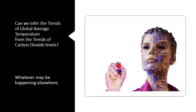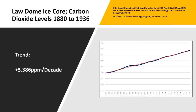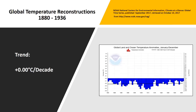We will look at the two major sub-periods to determine whether we can infer the trends of global average temperature from the trends of carbon dioxide levels. The first sub-period is 1880 to 1936. Throughout this time, the levels of carbon dioxide in the atmosphere rose steadily, with a trend of 3.386 parts per million per decade. However, the trend in global average temperature over this period of 37 years was zero.